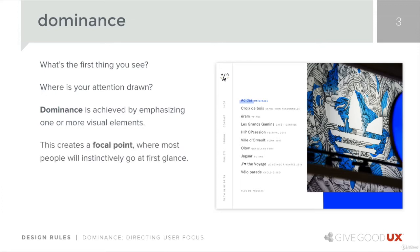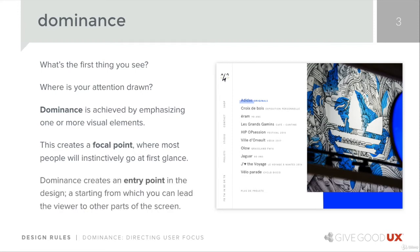This creates a focal point where most people will instinctively go at first glance. That dominance can create an entry point in the design — it's a starting point from which you lead the person to the other parts of the screen. Remember everything we've looked at up to now, especially in the last example of the form. You are purposefully leading people from point A to point B on a screen. That's a big part of what dominance does — it shows us where to start. It screams: start here.